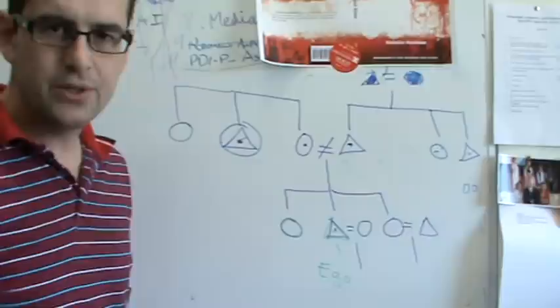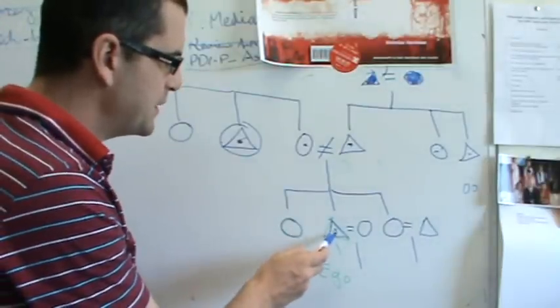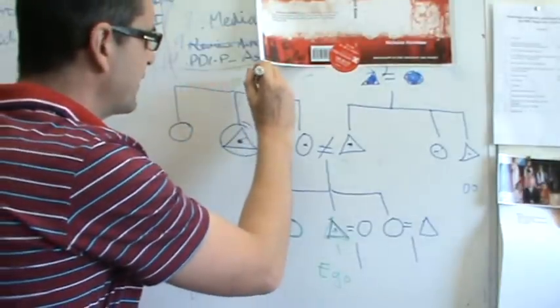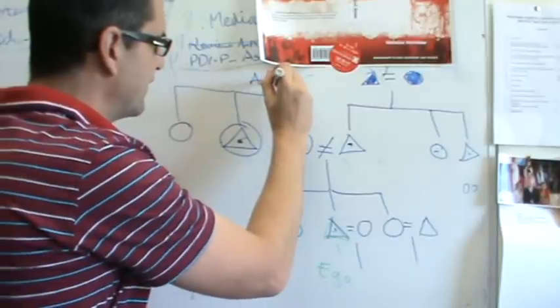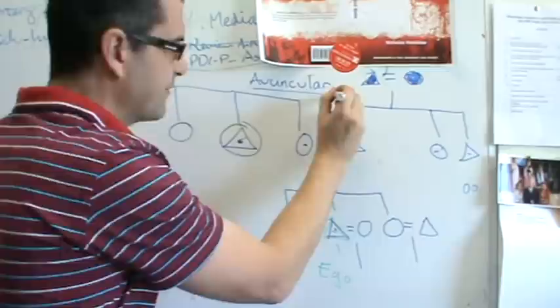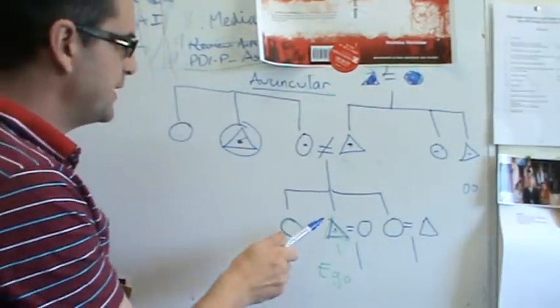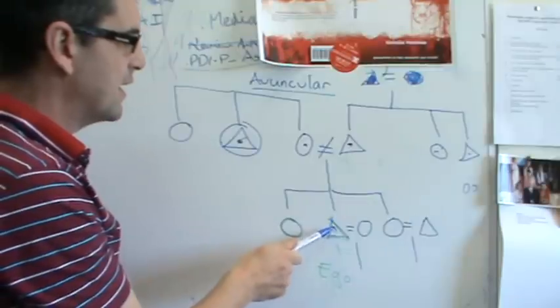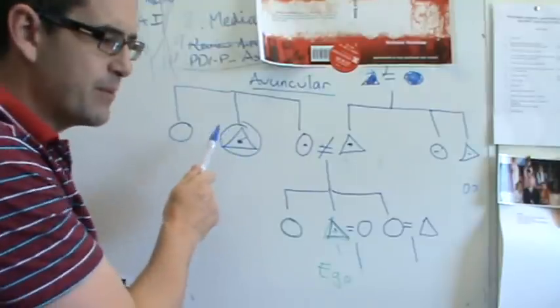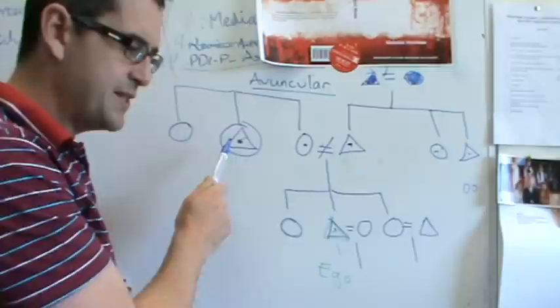That person is your mother's brother. So the relationship between you and your mother's brother, we sometimes call the avuncular. The avuncular relationship is between a child and his or her mother's brother.